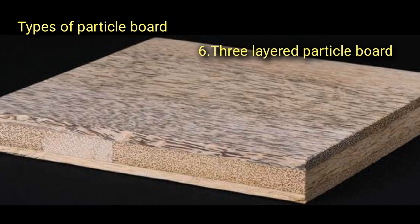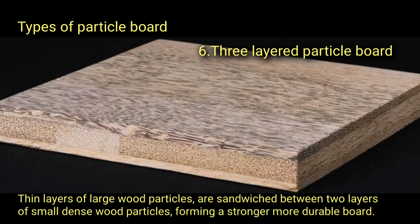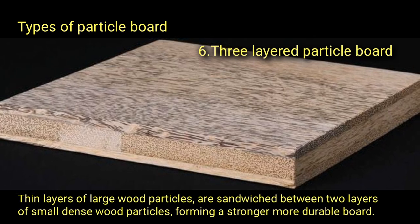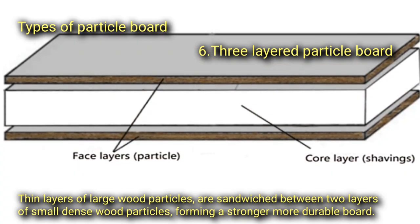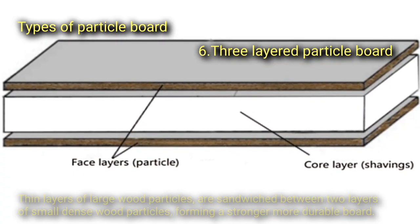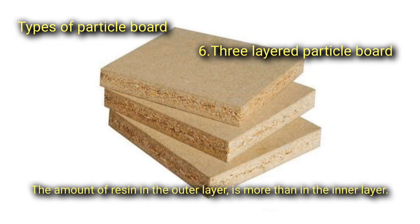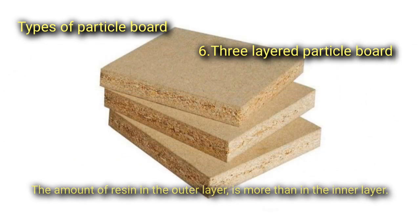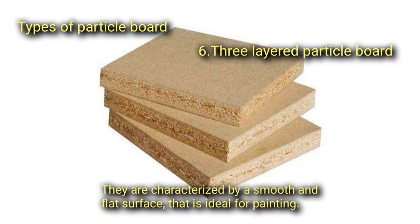Three layer particle board. Thin layers of large wood particles are sandwiched between two layers of small, dense wood particles, forming a stronger, more durable board. The amount of resin in the outer layer is more than the inner layer. They are characterized by a smooth and flat surface that is ideal for painting.